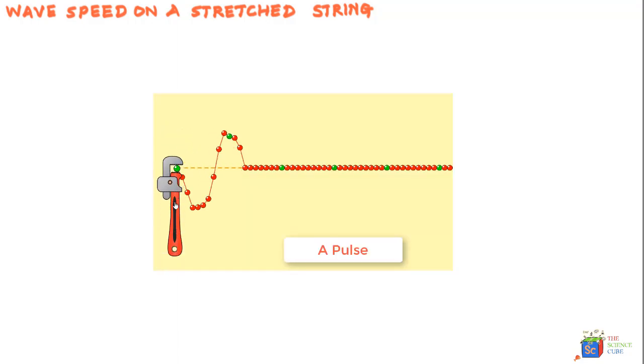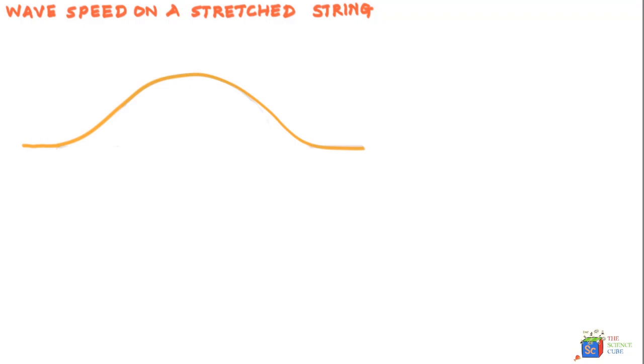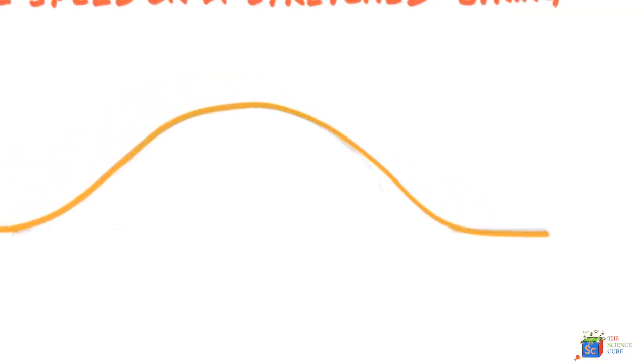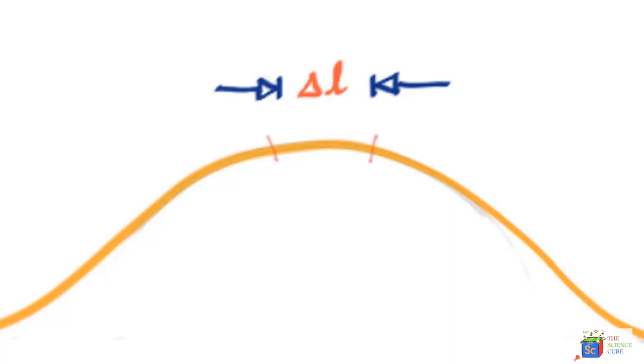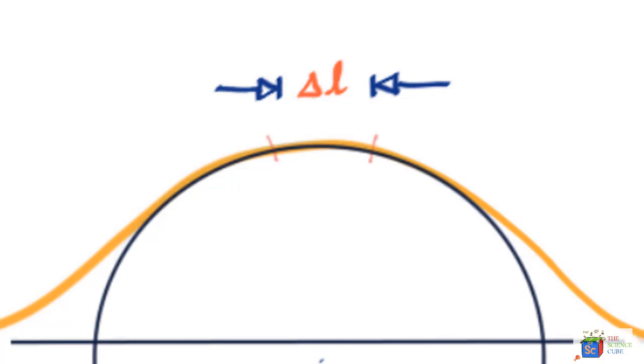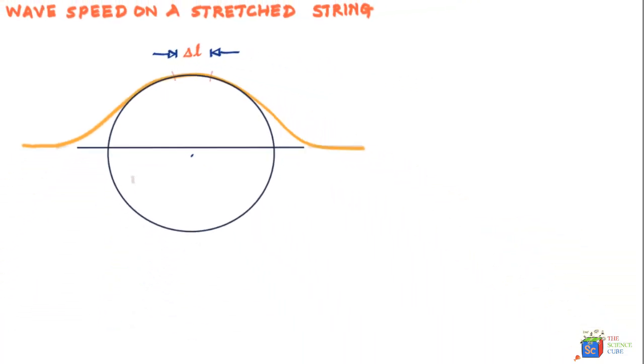Consider a single symmetrical pulse moving with velocity v along a string. Let us zoom into a small string element of length Δl, and this is part of the pulse that is an arc of a circle of radius R.